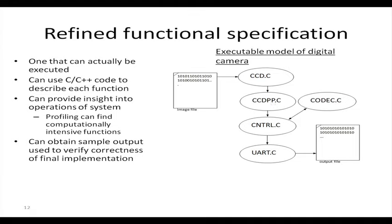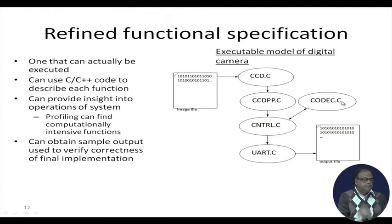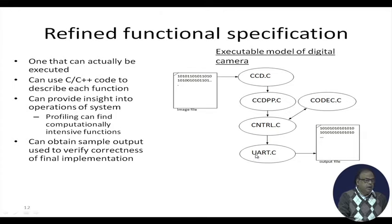Preprocessing consists of zero bias adjustment. There is also a codec module where we do compression using DCT. There is a controller module that controls the invocation of all these C programs. Once these steps are done, we come to the UART module — Universal Asynchronous Receiver Transmitter — which handles serial communication and sends data through an output file to a computer.